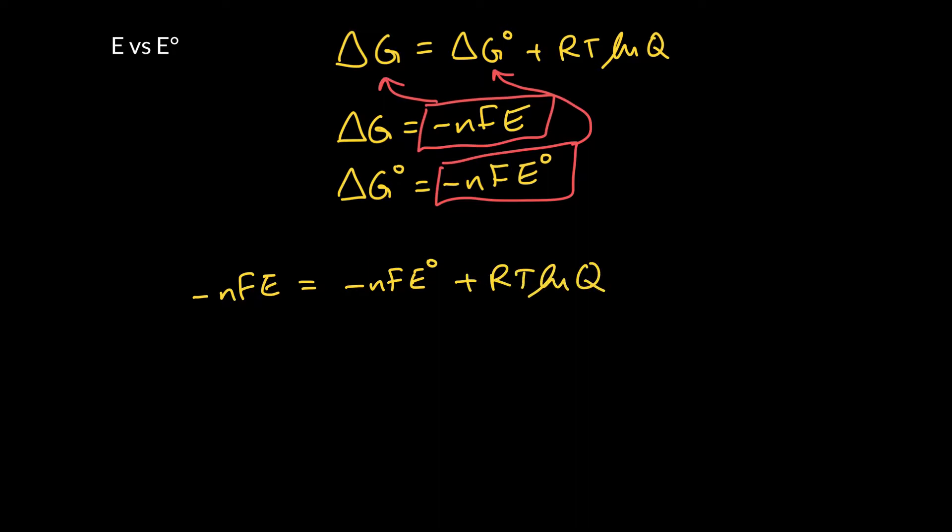And if we just want E by itself, we can divide both sides by minus NF. That will give us the cell voltage is equal to the standard cell voltage minus RT over NF times by the natural log of the reaction quotient.